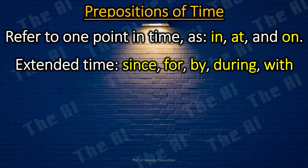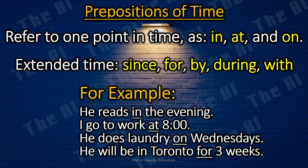Prepositions of time. The preposition of time refers to one point in time; use the prepositions in, at, and on. We also use other prepositions such as since, for, by, during, and with to refer to extended time. For example: He reads in the evening. I go to work at 8 o'clock. He does laundry on Wednesdays.